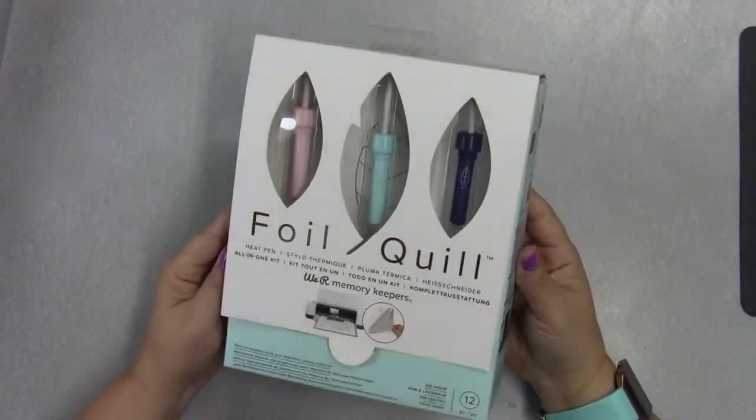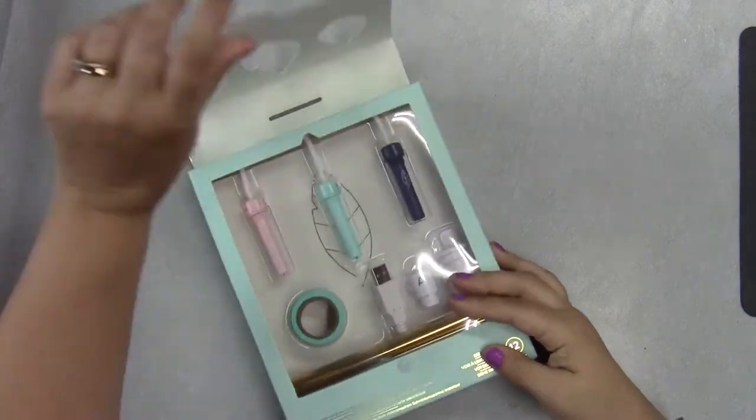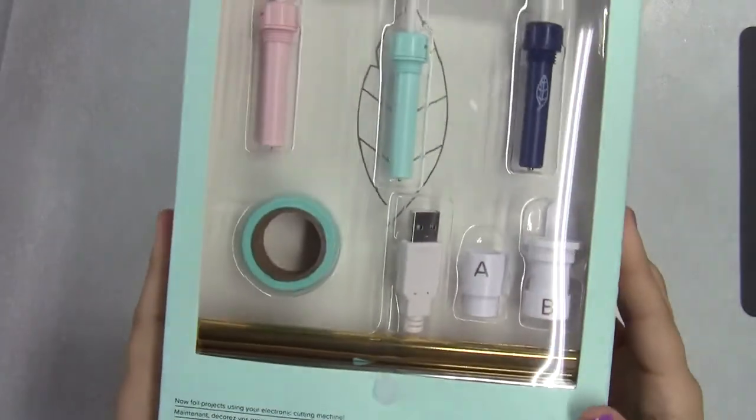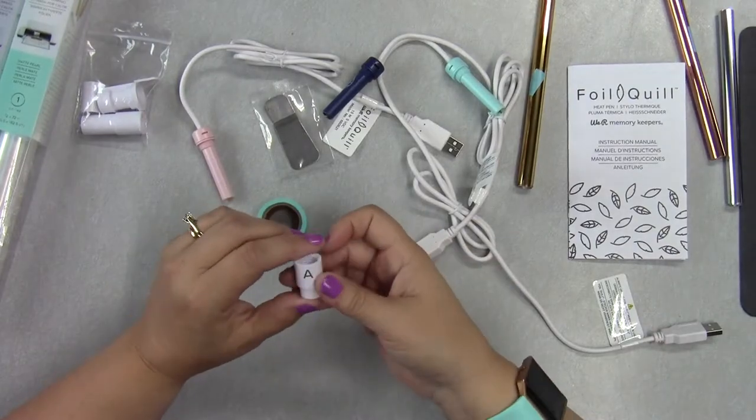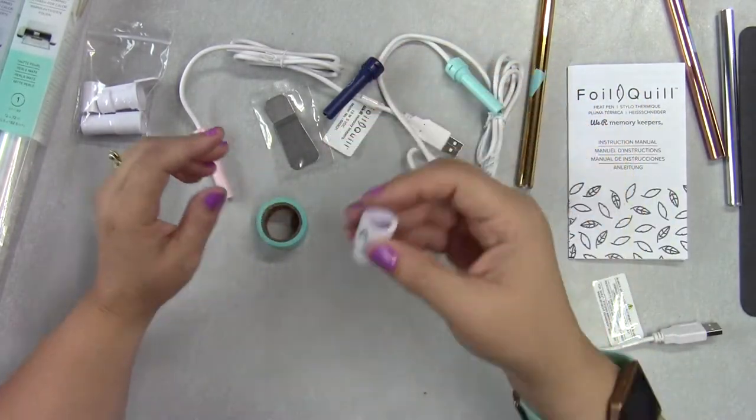Hi everybody, thanks for joining my channel today. I have a review for you of the Memory Keepers Foil Quill. When you get this, it comes with adapters for four different machines: the Silhouette Cameo, the Brother, the Cricut, and the Sizzix.